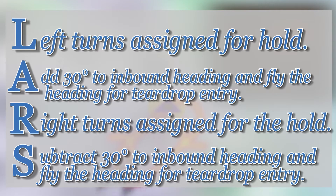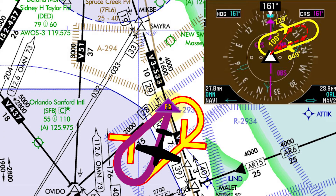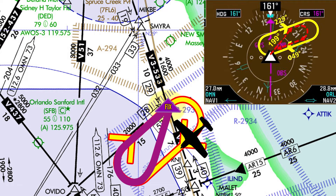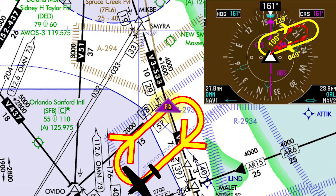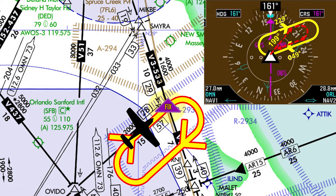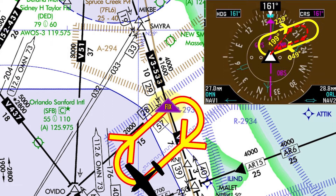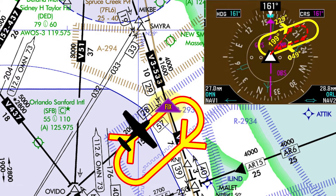Remember LARS: fly for one minute, make a standard rate turn to the inbound heading, intercept and track the inbound leg, and notify air traffic control they are established on the hold. When reaching Okie after becoming established on the hold, the pilot will make a standard rate right turn. Instead of timing the hold, the pilot would fly the outbound leg until they are 2 nautical miles from Okie, then make a standard rate right turn inbound. Intercept and track the inbound leg, continue the hold until 1438 Zulu, and continue from the hold according to ATC clearance.